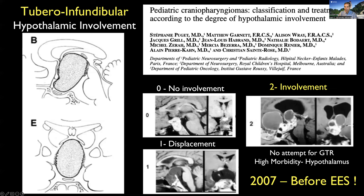Tuber infundibular craniopharyngiomas — those with true hypothalamic involvement, also called grade two by the José paper — are highly complex, and the risk of removing them is significant to the point that some authors have recommended no attempt for gross total resection because of the high morbidity to the hypothalamus. But this was before advanced endoscopic endonasal surgery, and I want to show you how this has evolved with better knowledge of anatomy and surgical technique.